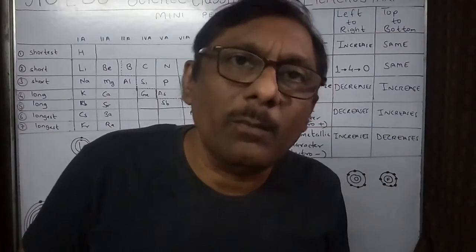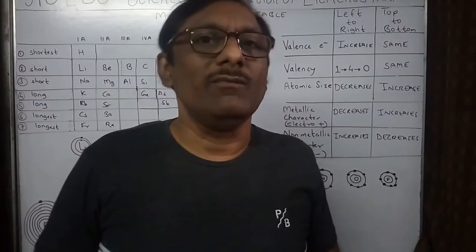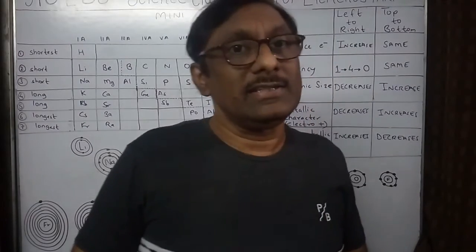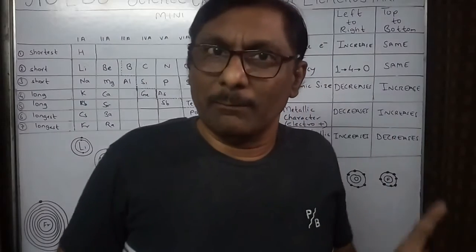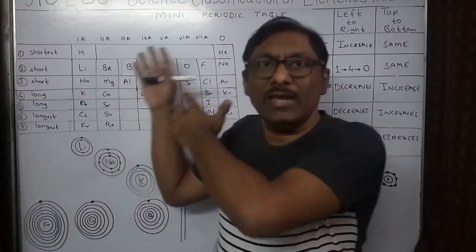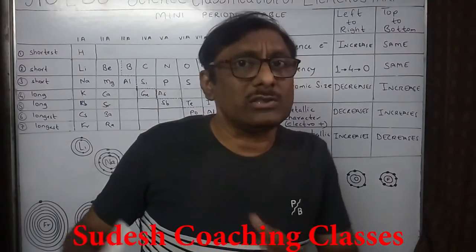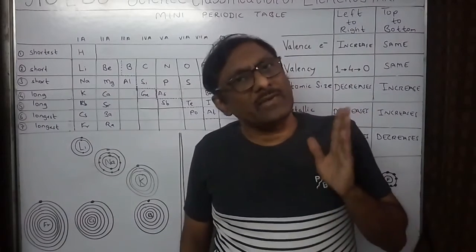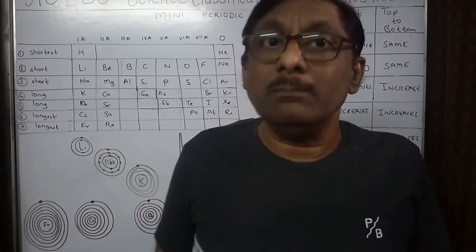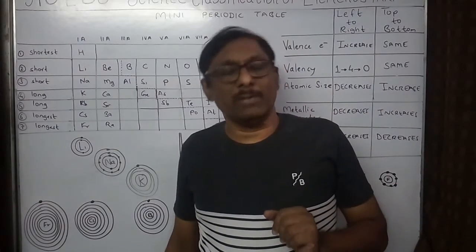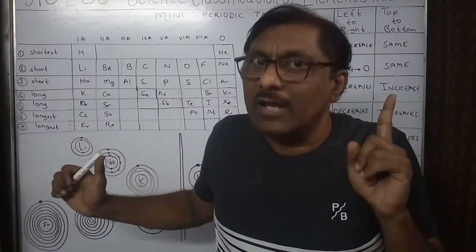So you understood the whole lesson. We started from the classification of elements — from Lavoisier's triads, Newlands' octaves, then Mendeleev's periodic table. Then came Henry Moseley, who stated the very important thing: that the fundamental property of any element is its atomic number, which equals the number of protons and number of electrons. We studied the modern periodic table. Work this lesson smartly, not hardly — don't go for mugging everything; you have to understand it and it will come to you automatically.